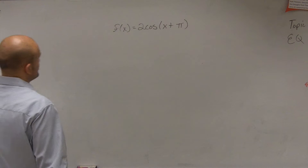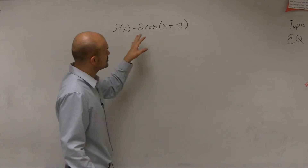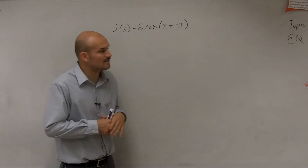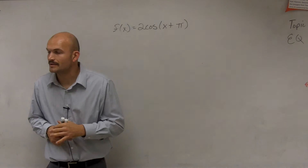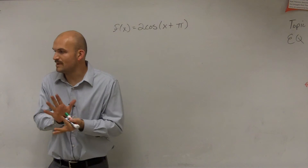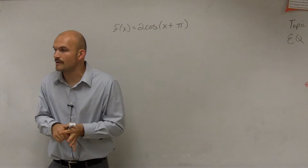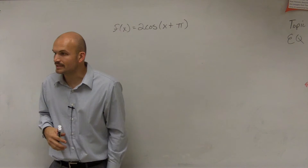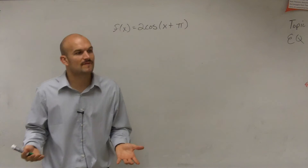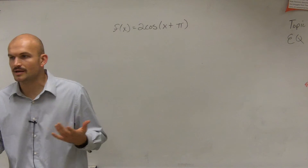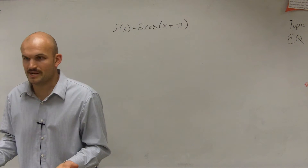What I have here is f of x equals 2 cosine of x plus pi. The main important thing, ladies and gentlemen, when doing a problem like this is we want to find all the important information.